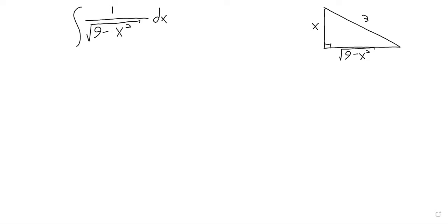So the idea of trigonometric substitution is: suppose we couldn't take that just using an inverse trig function. Suppose we saw a square root like that out in the wild and we didn't know how to proceed. We could observe that this looks like it comes from a right triangle. If this is x and this is 3, then this is the square root — that comes from the Pythagorean theorem.